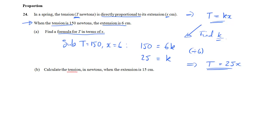Okay, part b, we want to find the tension, so we want T, when we're given the extension. So this is a standard way to use this formula. We'll substitute x equals 15 into the formula that we've just derived. So T is going to be equal to 25 times 15. So do that multiplication, and the tension is equal to 375 newtons.